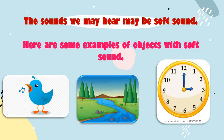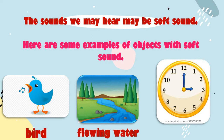The sounds we hear may be soft. Here are some examples of objects with soft sound. The first one is the sound of a little bird. The second one is the sound of flowing water. And the third is the sound of a ticking clock.